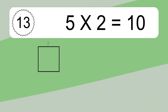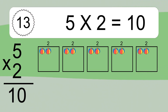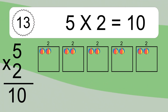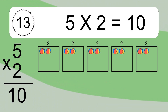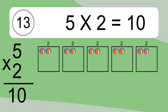5 times 2 equals what? 5 times 2 equals 10. We have 5 boxes, and each box has 2 colorful balls inside. If you count all the balls in all the boxes together, you will have 5 times 2 balls. This equals 10 balls.